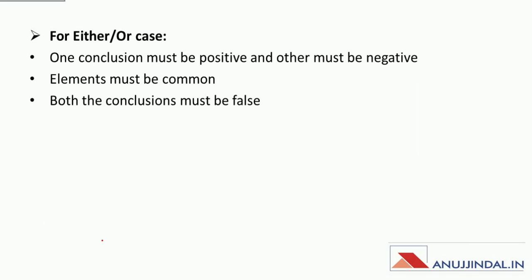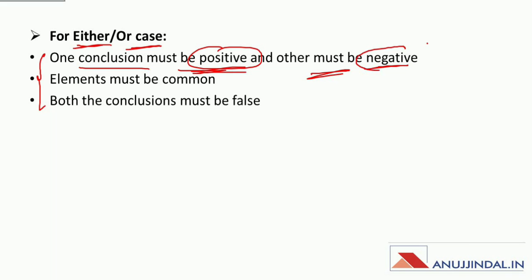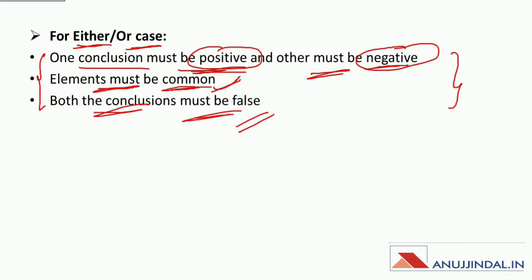Guys, I hope you are understanding. Ye jitne bhi advanced questions hain, aap ko samajh mein aa gaye honge. Aap ko kuch nahin karna — jo basic concepts aapne pichle session mein sikhe thay, bas woh agar aapko pata hai, then I guarantee aapka koi bhi question syllogism ka nahi chutega. Now let's move on to the either-or case. In the either-or case, you have to check for three points: number one is one conclusion must be positive and the other must be negative; next, elements must be common; and both the conclusions must be false. If these three conditions are met, it will be the case of either-or, otherwise it will not.